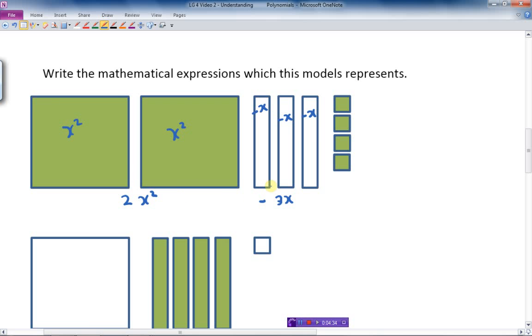And the area is x. That's minus x because it's white. And these ones are 1 by 1 squares. And how many of them are there? There's 4. So this is 1, that's 1, that's 1, and that's 1. And that just makes positive 4. So the polynomial that this represents would be 2x squared minus 3x plus 4. That's a trinomial.